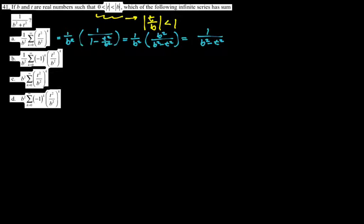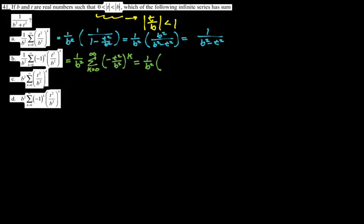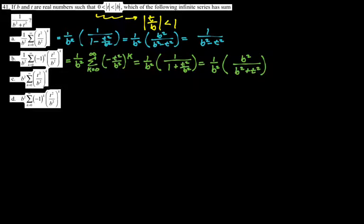Now I'm going to look at B. I rewrite it: negative 1 to the K and T²/B² to the K — bring them under one parenthesis, so R is negative T²/B². The sum is (1/B²) over (1 minus negative T²/B²). This cleans up to 1/(B² + T²), which is the answer. So my answer is B. If that had not been the answer, I would have just chosen D and not done the work, because of the difference in denominators we were getting.